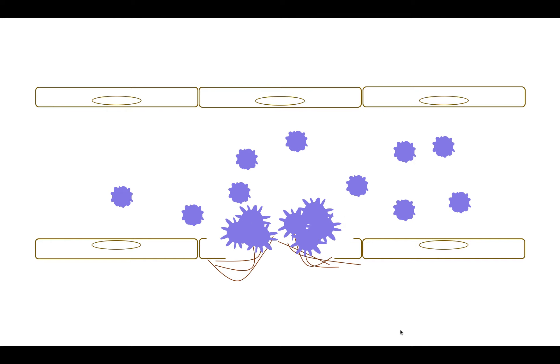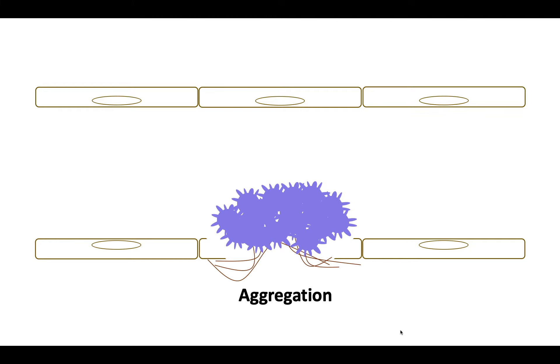Secretion enables platelets to recruit additional platelets in a continual process of platelet binding, activation, and recruitment, known as aggregation. This mass of aggregated platelets is formally known as the platelet plug. Forming the platelet plug marks the end of the first step of the process called primary hemostasis.